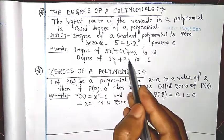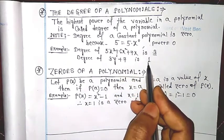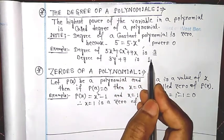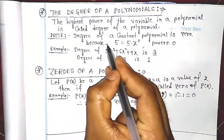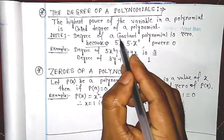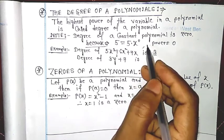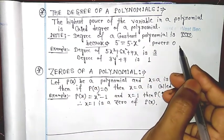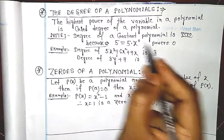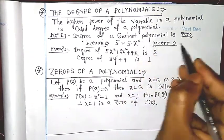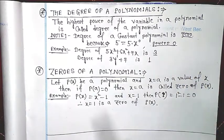In the polynomial 3y + 7, the highest power is 1, so the degree is 1. Note: the degree of a constant polynomial is 0, because any constant like 5 can be written as 5 into x to the power zero. The highest power is zero, so the degree of a constant polynomial is 0.